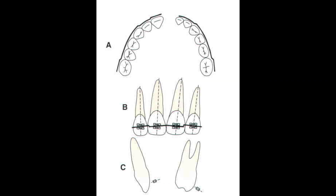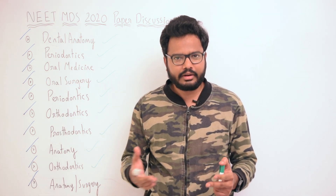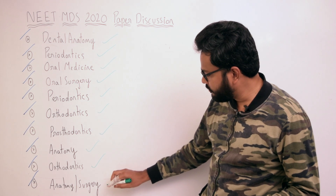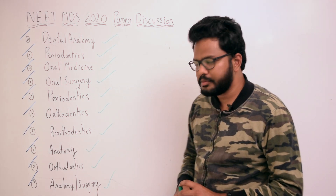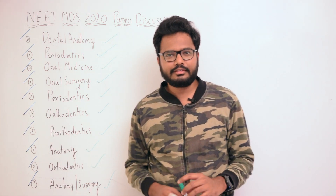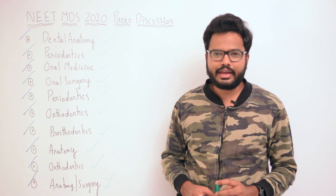As you can see, the illustration depicts first order, second order, and third order bends. Second order bends in the maxillary incisal segment are given to compensate for the inclination of incisal edges of these teeth relative to the long axis of the tooth. Second order bend was likely asked in your exam.